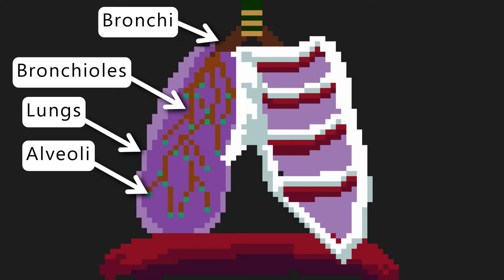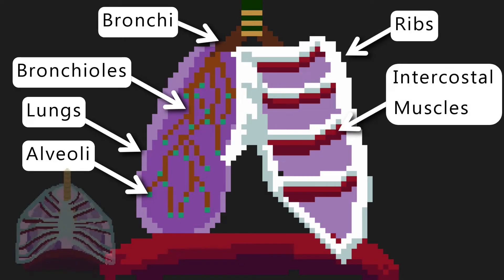You need to be able to label the lungs themselves. Surrounding the lungs are the ribs. Between the ribs are the intercostal muscles, which cause the ribs to expand and move up, and contract and move down.